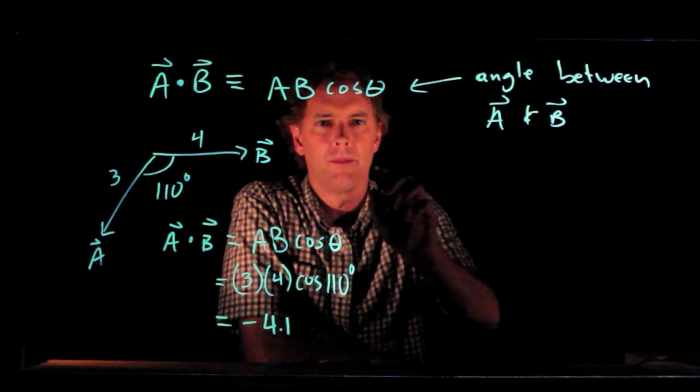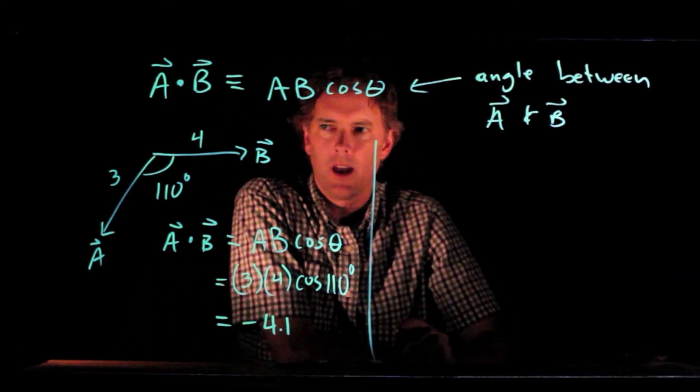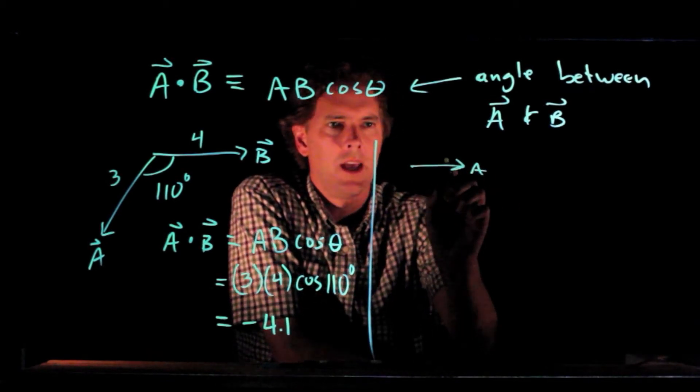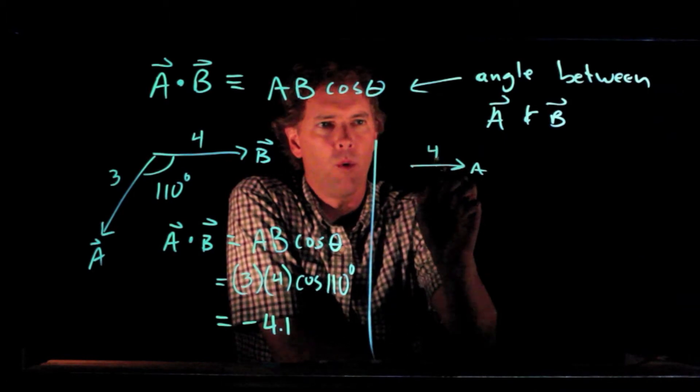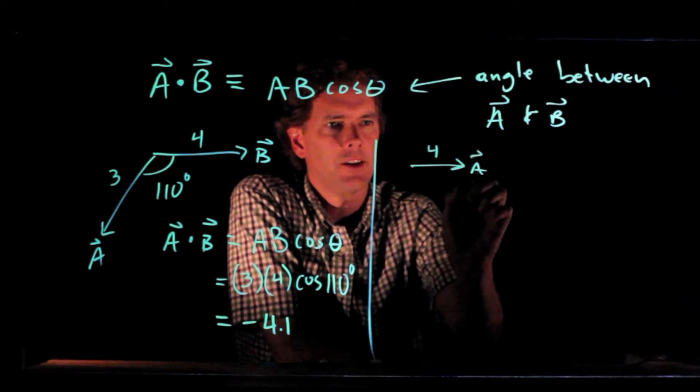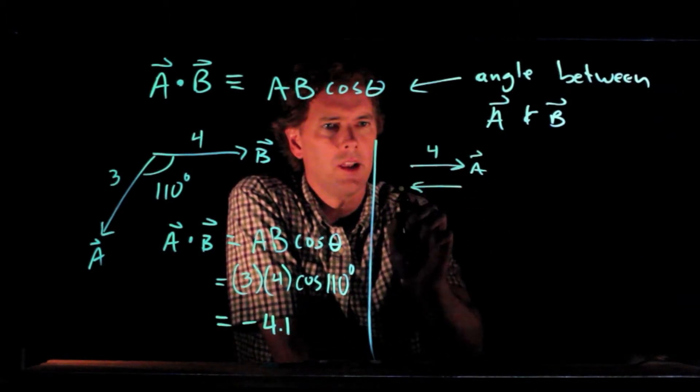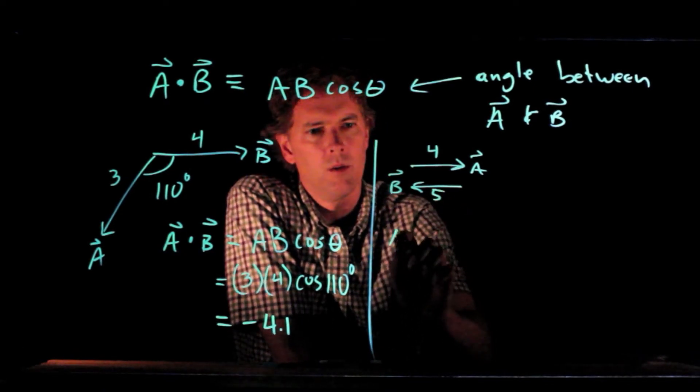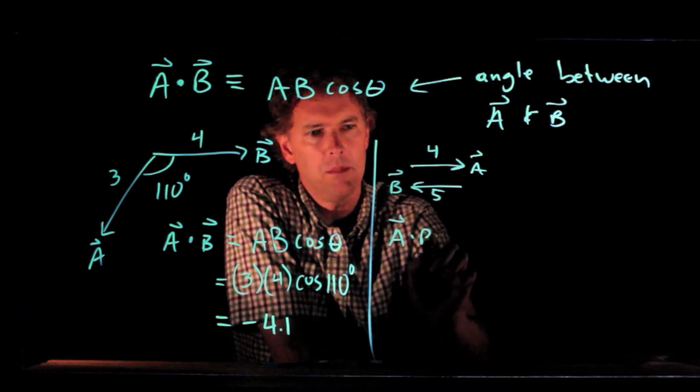Alright, let's try another one. Let's say that A is pointing to the right and has magnitude 4, and vector B is pointing to the left and has magnitude 5. What is A dot B?